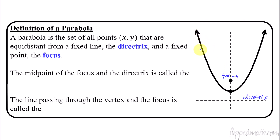All the points that are equidistant from the focus and directrix — I'm going to show you how that works in just a minute. The midpoint of the focus and the directrix, right in between them, is called the vertex.